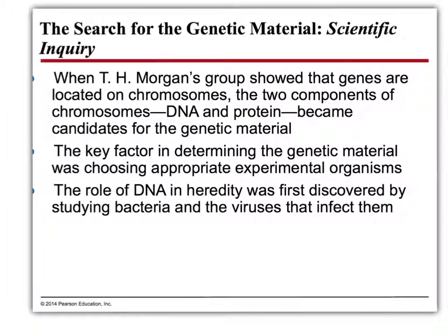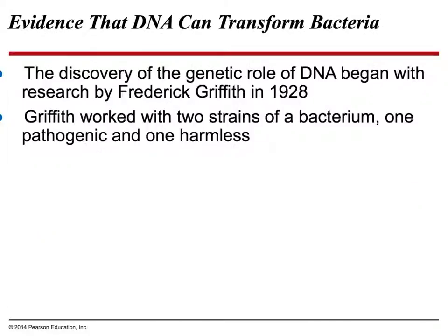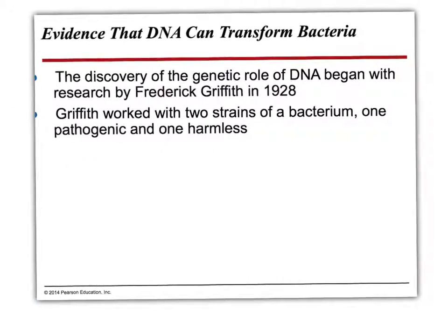The role of DNA in heredity was first discovered by studying bacteria and the viruses that infect them. This experiment by Griffith is important. He worked with two strains of bacteria: one strain was lethal, and the other was harmless. What Griffith did was inject the lethal strain into a mouse — and lo and behold, the mouse dies. He then injected the non-lethal strain into a mouse — the mouse lives, happy as can be.